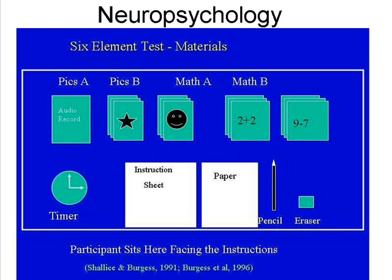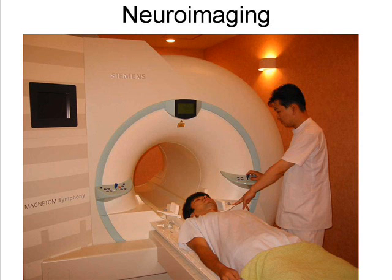Pictured is the six-element test, used to test executive function using matching memory and math skills in a timed setting. Although MRI is the best way to detect white matter atrophy, it is difficult to compute the relationship white matter alterations have with neuropsychological functions, because white matter atrophy does not necessarily mean dementia. Much of today's research is trying to find scaling methods to determine an accurate way to measure whether the atrophy will result in dementia.